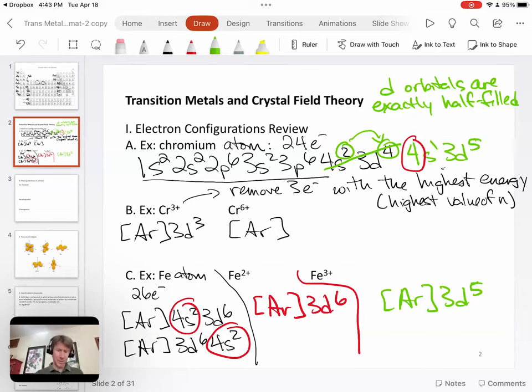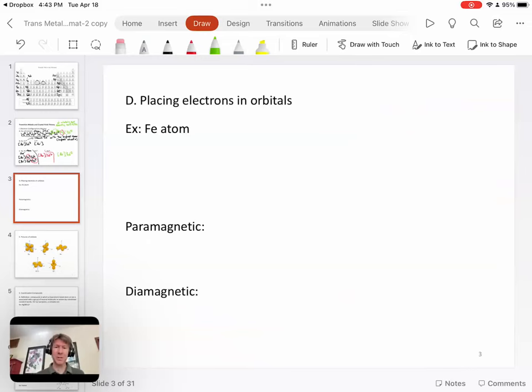From there we can actually start placing electrons in orbitals. We'll do an example with the iron atom. Remember, we just said it is argon 4S2 3D6. That's usually how I write it, but write the 3D6 first - that's fine. The only electrons we're going to be interested in are the D electrons as we talk about transition metal complexes and crystal field theory. So let's focus on the D orbital. This will be the 3D orbital. There are five of them.